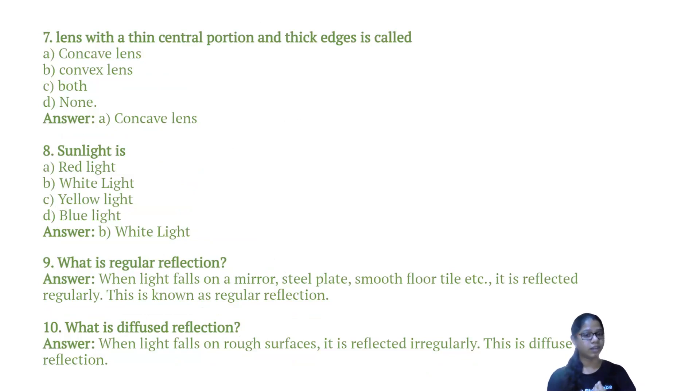What is diffuse reflection? When light falls on rough surfaces, it is reflected irregularly. This is diffuse reflection.